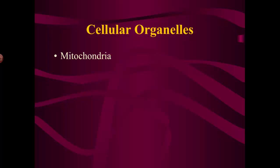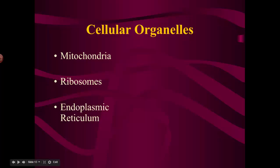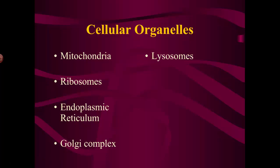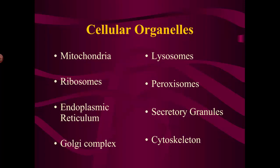We're going to learn about mitochondria, ribosomes — we already know a lot about ribosomes so we'll just review that — the endoplasmic reticulum, which is also fun to say, the Golgi complex, lysosomes, peroxisomes — you might recognize the word peroxide in peroxisomes — secretory granules, and the cytoskeleton. These are the organelles we're going to look at over the next couple of videos.